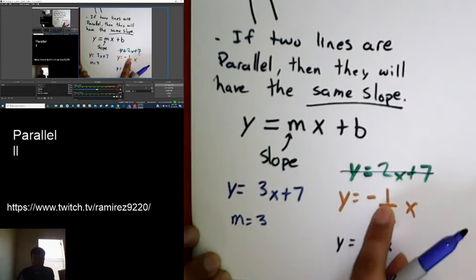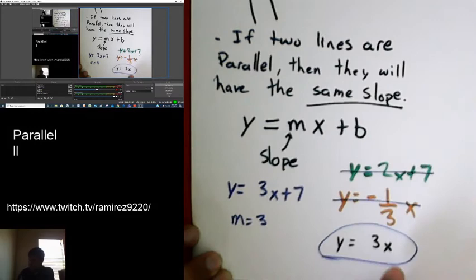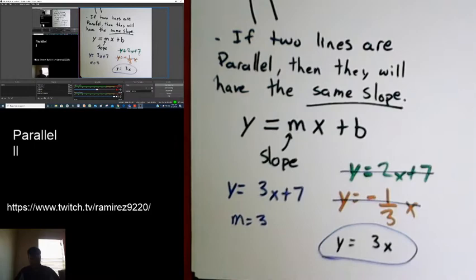No. It has a 3, but it's in the fraction, 1 over 3, so no. And yes. Even though it doesn't have a plus something, it's still an equation.